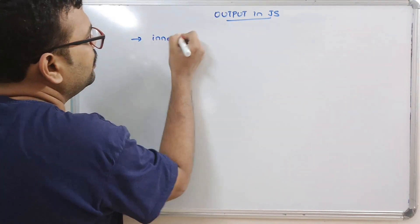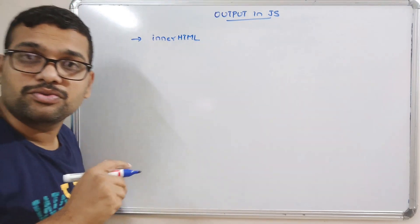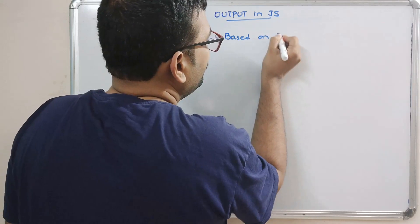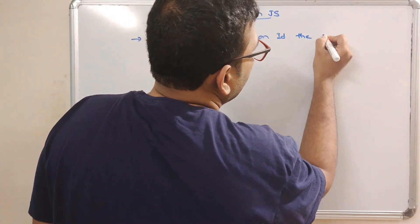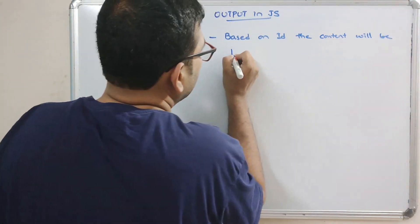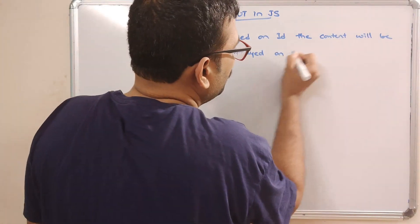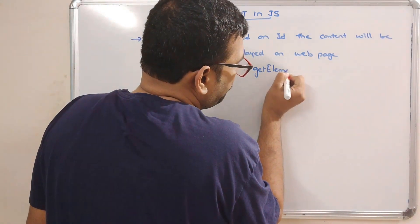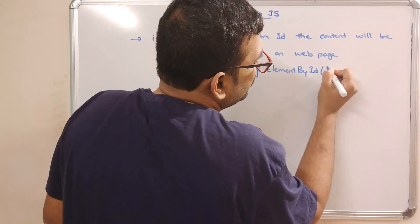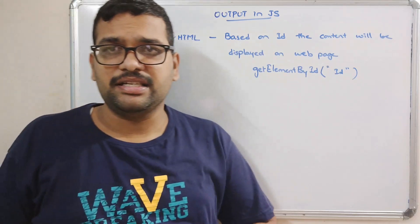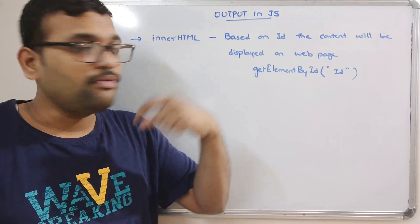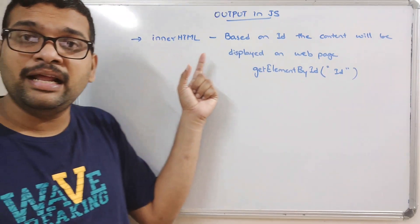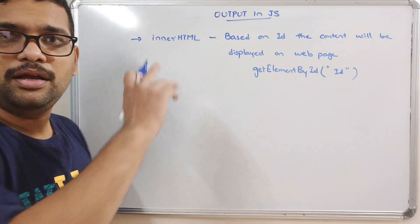The first one is innerHTML. innerHTML is used to write the content on the HTML based upon the id — the text or content will be displayed on the web page. This id is written by using getElementById followed by the id. Based upon the id, we first retrieve the element and then write the content into that particular id using innerHTML.